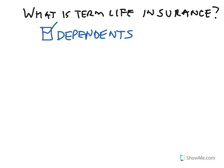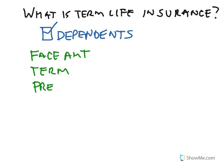There are three basic parts to every policy: there's the face amount, there's the term, and then there's the premium. The face amount can vary — it's basically the amount the policy will pay out if something happens to you. For example, let's say you have a face amount of $200,000.